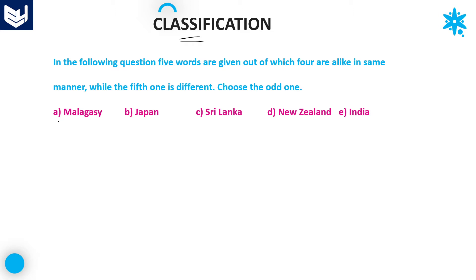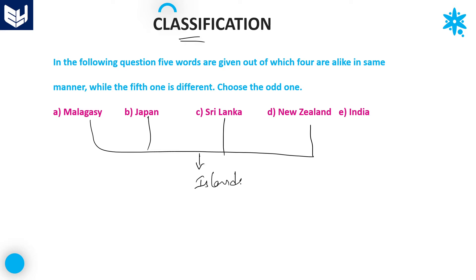Among those five options, Malagasy, Japan, Sri Lanka, and New Zealand — all these four are islands. But coming to India, India is not an island — it is a peninsula. So that is the different one which does not belong to the group and is not following the same pattern as the remaining four. Option E is the right answer for this question.